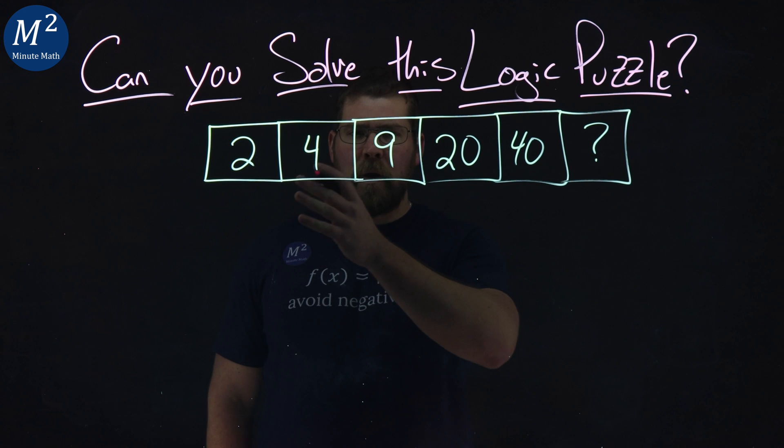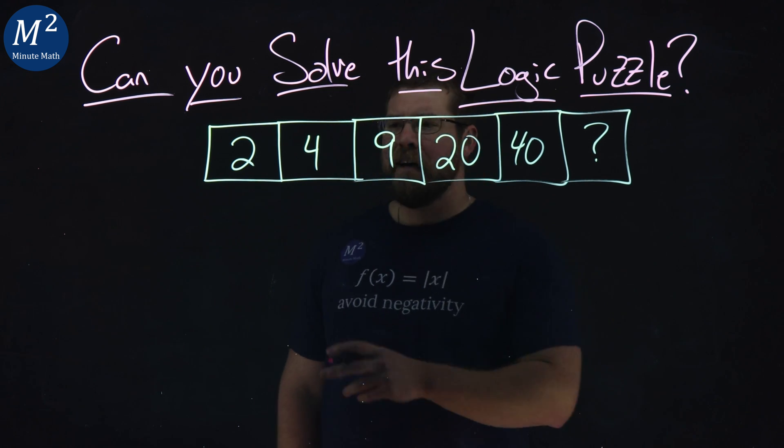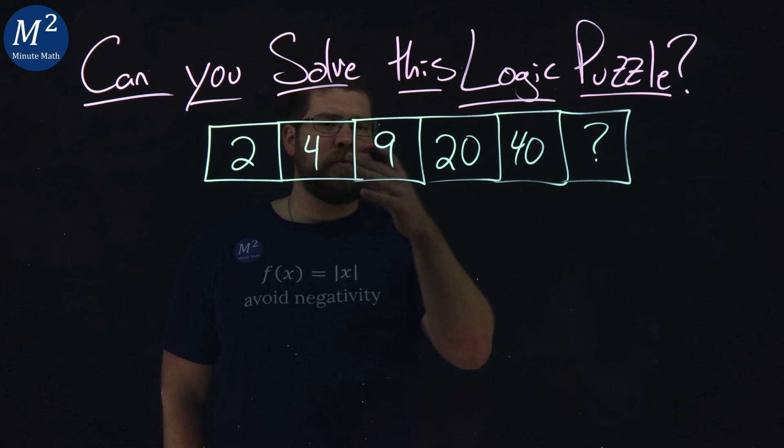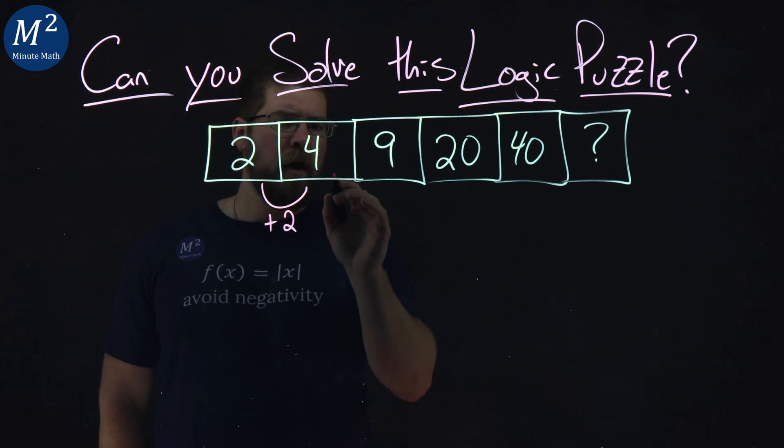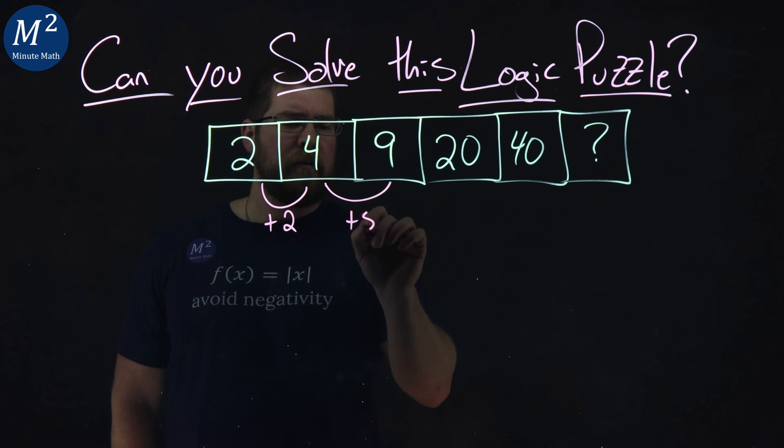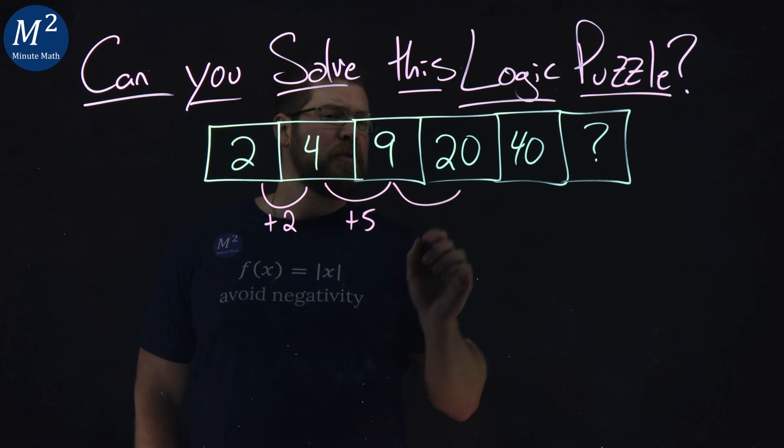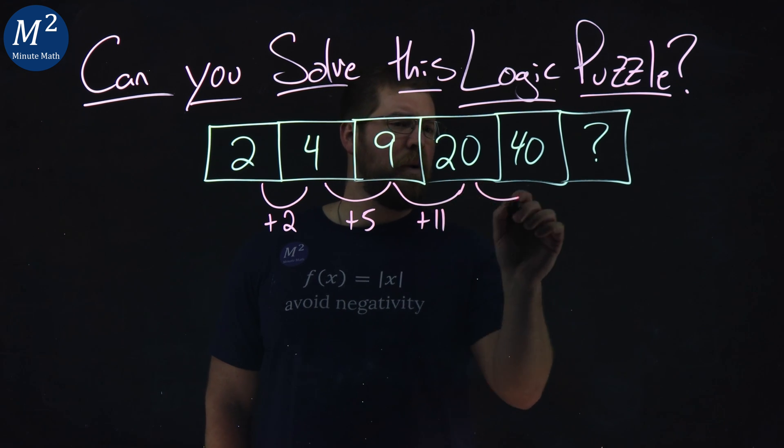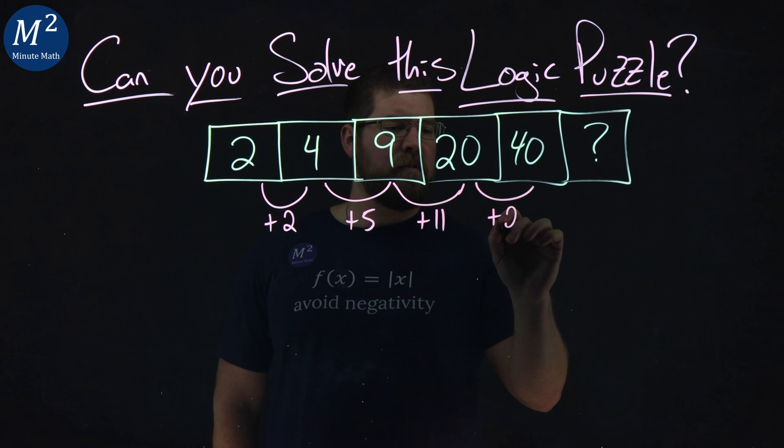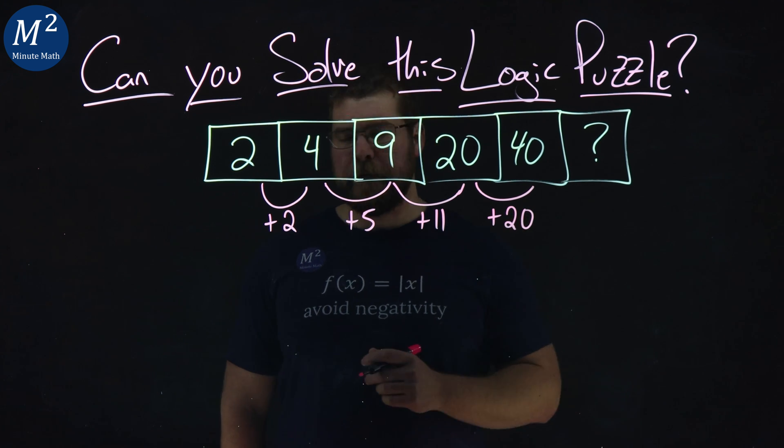All right, what do I look at here? First thing I'm looking at is addition. What's the difference between each one of these numbers? So from 2 to 4, I have a plus 2 going on. From 4 to 9, we have a plus 5. 9 to 20 comes out to be a plus 11. 20 to 40 is a plus 20, and we don't know what the next one is.